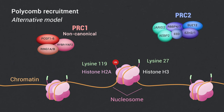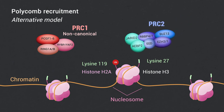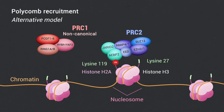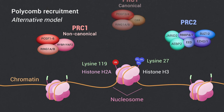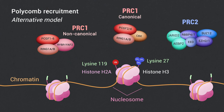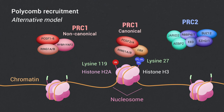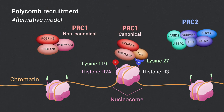This mark subsequently recruits the PRC2 complex, followed by trimethylation of H3K27 and recruitment of canonical PRC1.